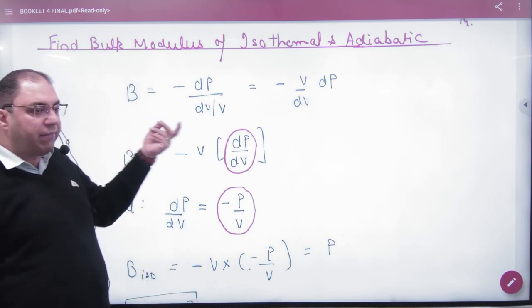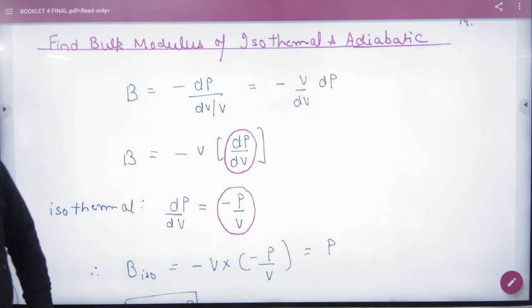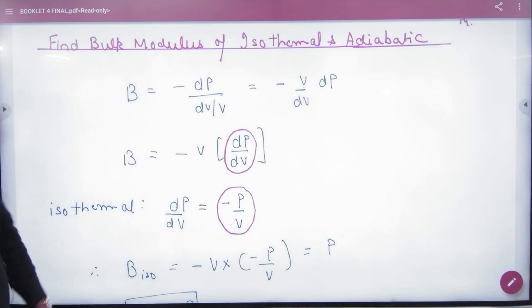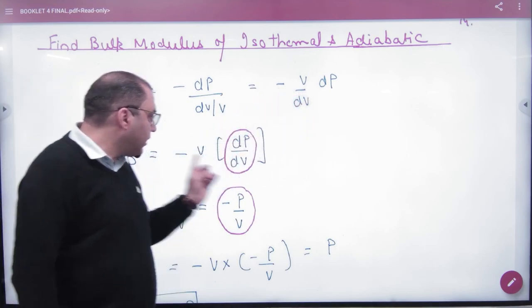So, Bulk Modulus is minus dp by dv by v. Here, V and dv here, see here. So, what happened? Bulk Modulus came. Dp and dv here, this time came.